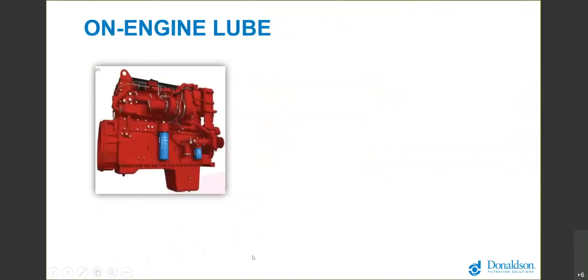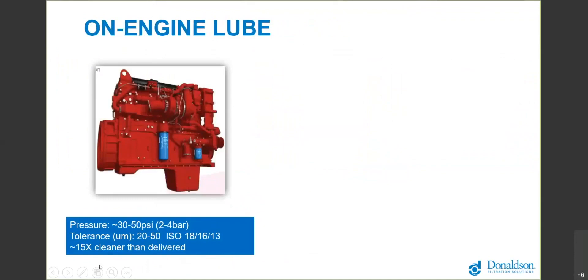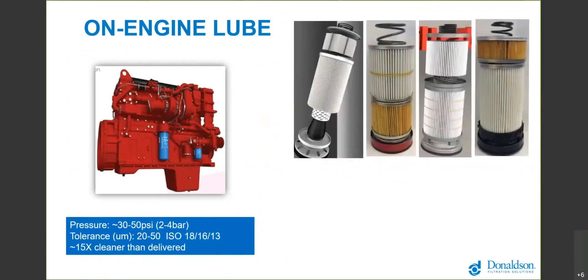Transitioning from fuel to lube, this is an on-engine lube filter, typically between 30 and 50 psi working pressure. That means the particles that we really care about are between 20 and 50 microns in size. That's why we target an ISO code of 18/16/13, and typically that's about a 15 times cleanliness improvement than what's being delivered currently to your equipment.